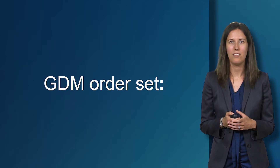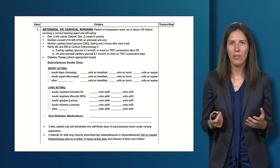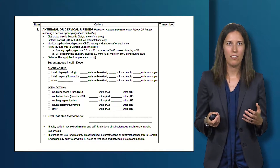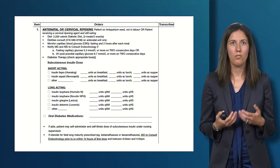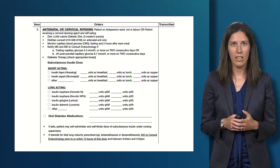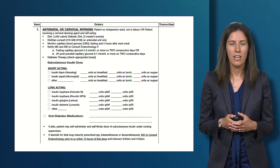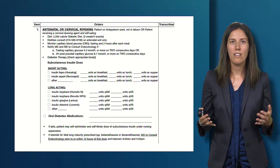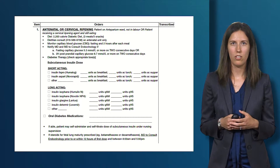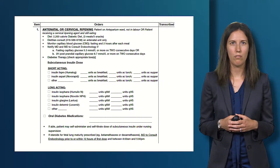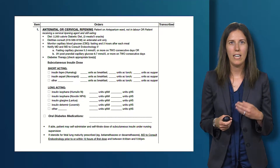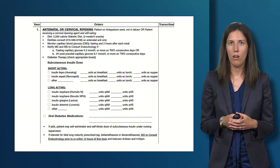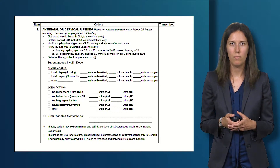The gestational diabetes order set has three parts: antenatal, labor and delivery, and postpartum. For the antenatal phase, orders include a diabetic diet and a dietitian consult if the patient is on the antenatal unit. There is an order to monitor blood sugar fasting and two hours after meals. If there is a trend of high blood sugars — two readings above target, meaning fasting above 5.3 mmol/L or two-hour postprandial above 6.7 mmol/L — the most responsible physician team is notified and a physician-to-physician consult to endocrinology is initiated.